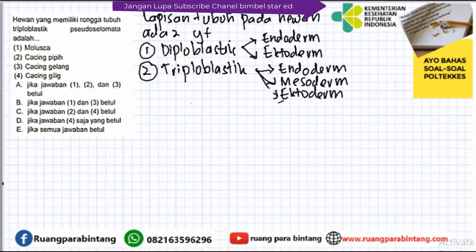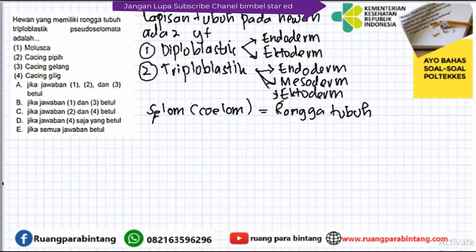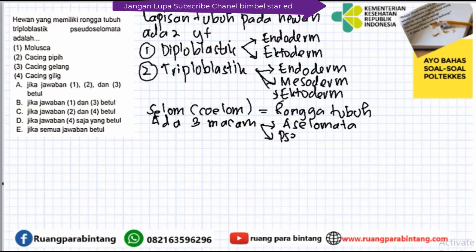Kemudian mengenai pseudocelomata. Selom artinya adalah rongga tubuh. Ini ada 3 macam: yang pertama aselomata, artinya hewan yang tidak memiliki rongga tubuh. Yang kedua pseudocelomata, yaitu memiliki rongga tubuh yang semu. Dan yang ketiga adalah selomata.